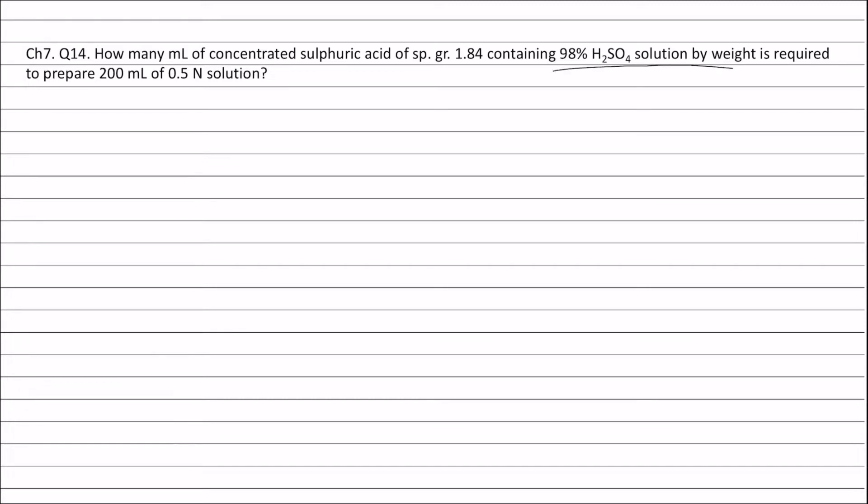98% sulfuric acid solution by weight means 98 by 100. 98 is the weight of sulfuric acid and 100 is the weight of solution. Therefore, volume of solution will be equal to weight divided by density, that is 100 divided by 1.84 milliliters, and this is also equal to 10 divided by 184 liters.